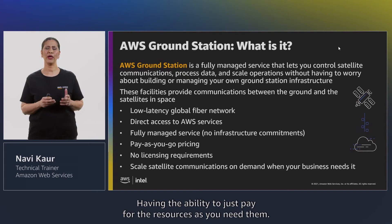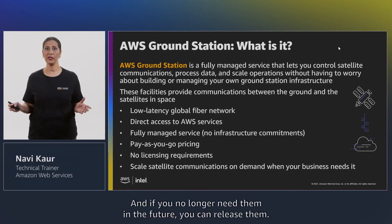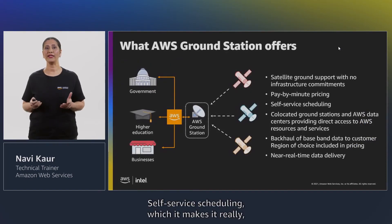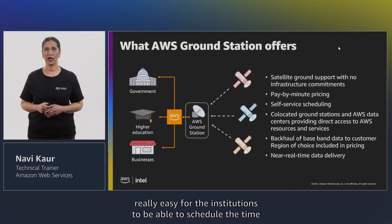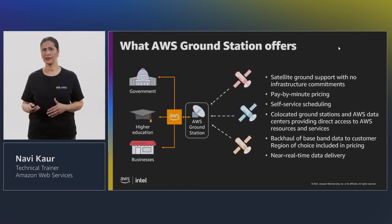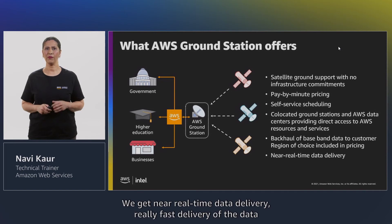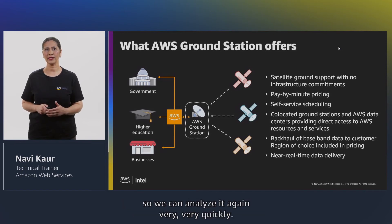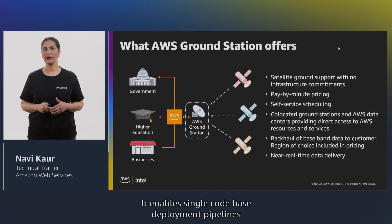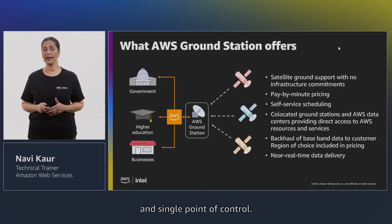Pay-as-you-go pricing means you only pay for resources as you need them, and when you no longer need them you can release them — there are no licensing requirements. You can scale your satellite communications as your business needs. Self-service scheduling makes it easy for institutions to schedule time to bring data into their environment and perform analysis, or even machine learning on that data. We also get near real-time data delivery, enabling very fast analysis. AWS services and features are available immediately, enabling single code base deployment pipelines and a single point of control.